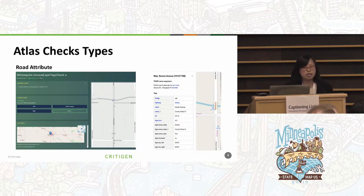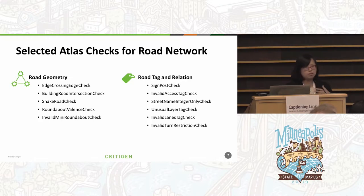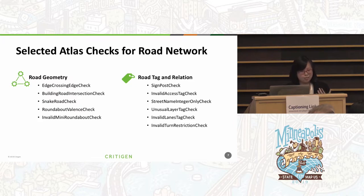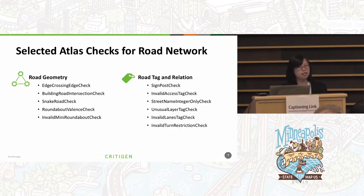Looking across all Atlas Checks currently in the software, our team hand-selected 11 Atlas Checks for the road network, trying to cover different aspects: road-crossing roads, road-crossing buildings, snake roads where roads are digitized like a snake, roundabouts with weird connections, and cases that were not proper roundabouts based on different rules. For tags and relations, we focus on the signpost, the access tag, the name, the layer and land tags, as well as the turn restriction check on relations.